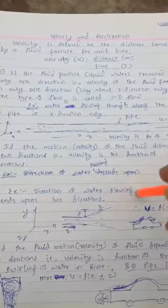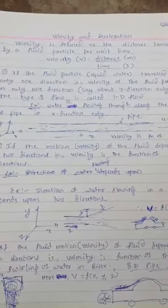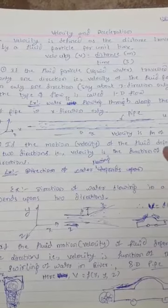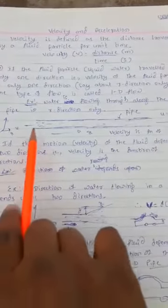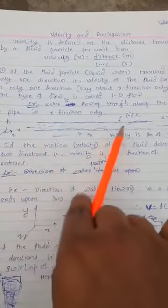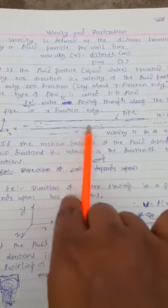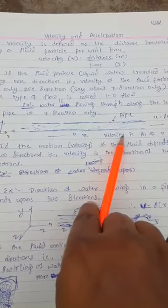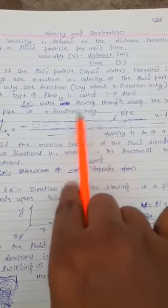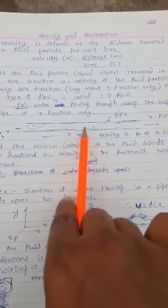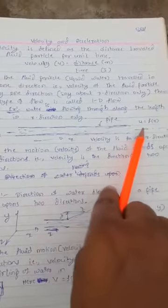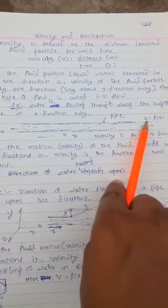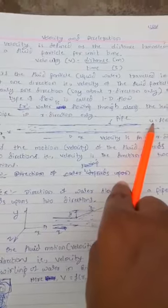If the fluid particles move in only one direction, the velocity of a particle is only in one direction — that is the one-dimensional flow. For example, here we have a pipe in which the water is flowing in only one direction, the x-direction. So this kind of example is the one-dimensional flow, where u is equal to f of x, and u is the velocity in the x-direction.